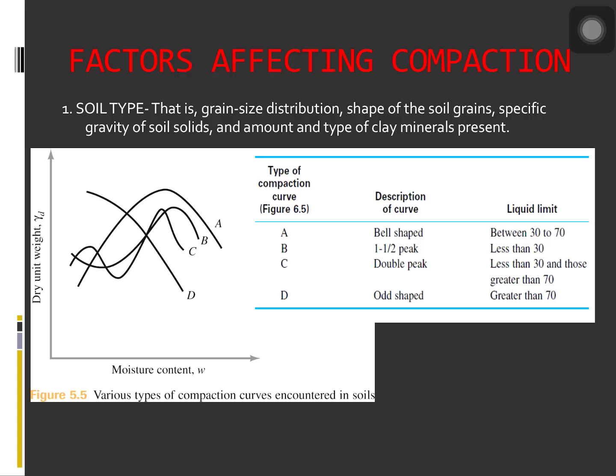First, let us talk about the effect of soil type. Soil type, that is the grain size distribution, shape of the soil grains, specific gravity of soil solids, and amount and type of clay minerals present has a great influence on the maximum dry unit weight and optimum moisture content. Lee and Swede Komp, in 1972, studied compaction curves for 35 different soil samples. They observed four different types of compaction curves, which are shown on the screen.